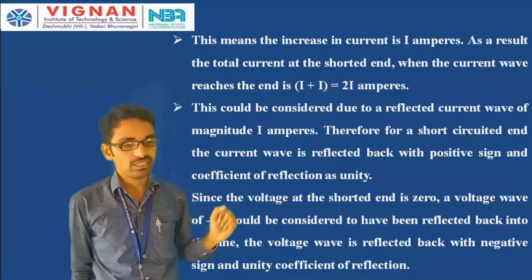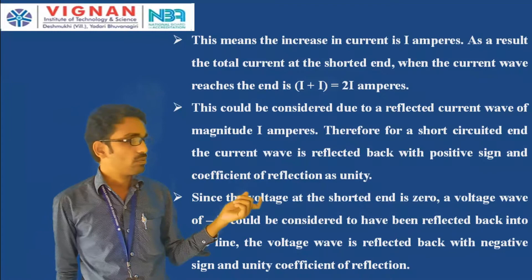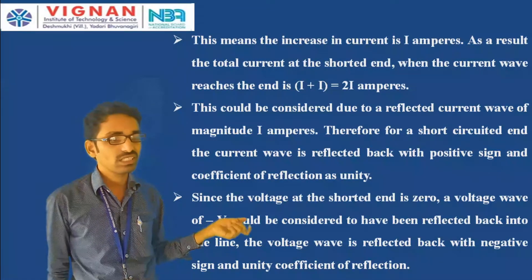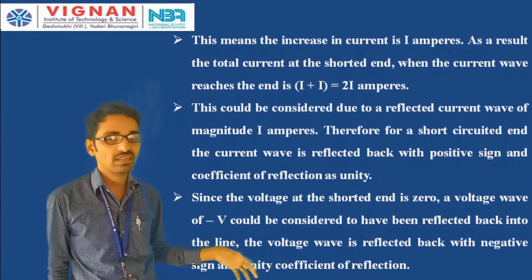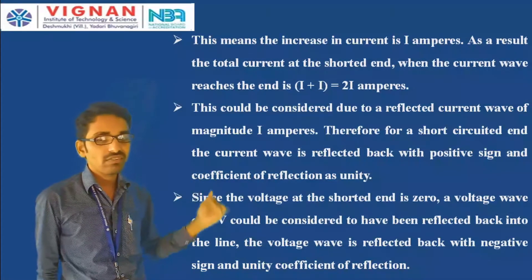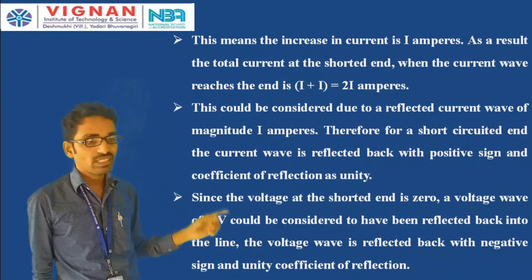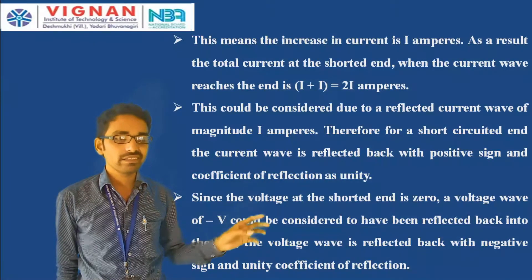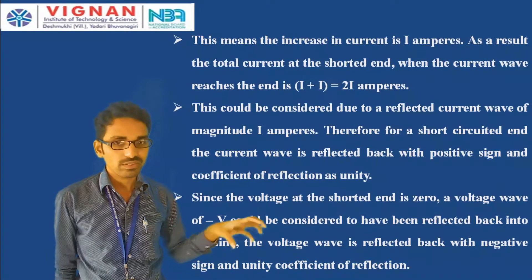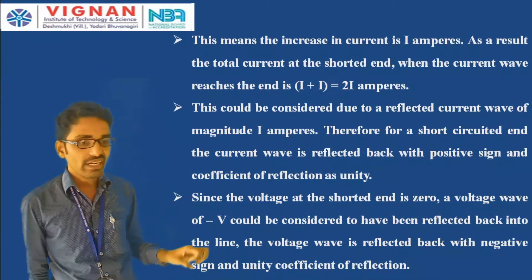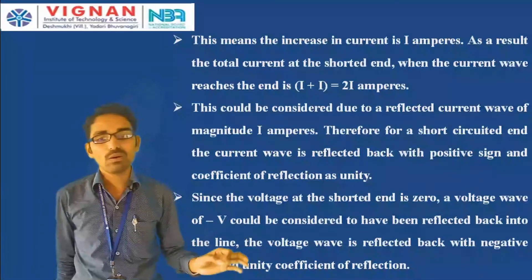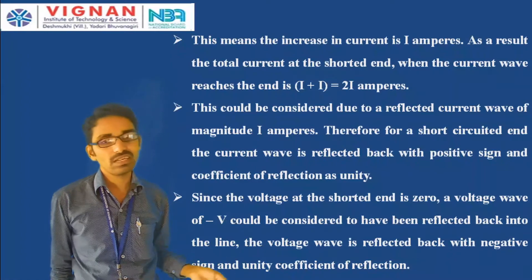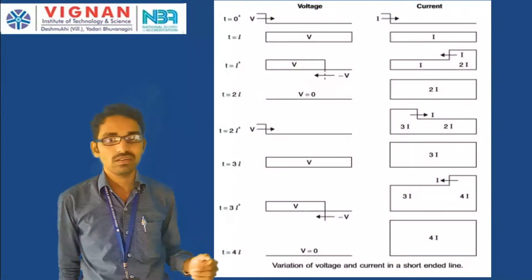At the short-circuited end the current wave is reflected back with positive sign and the coefficient of reflection is unity. Since the voltage at the shorted end is zero, a voltage wave of negative sign, that is −V, is reflected back into the line. The voltage wave is reflected back with negative sign and the coefficient of reflection is unity. So current increases but voltage is zero at the short-circuit condition.